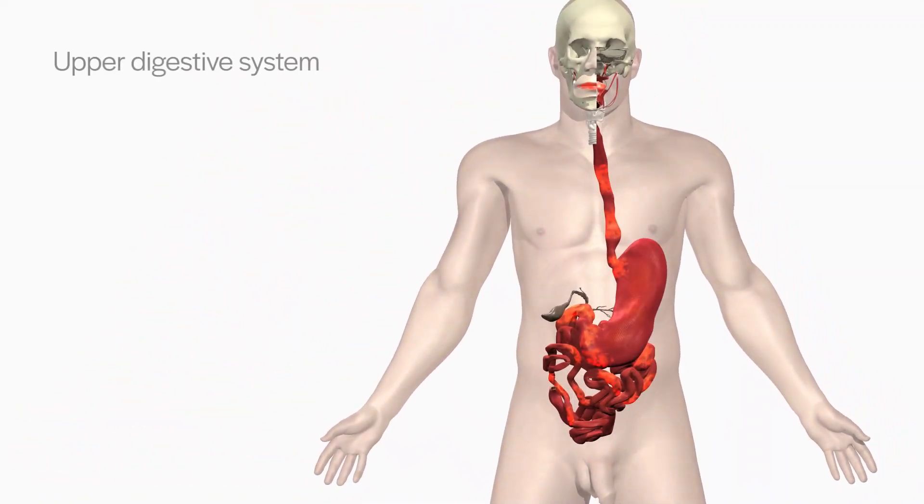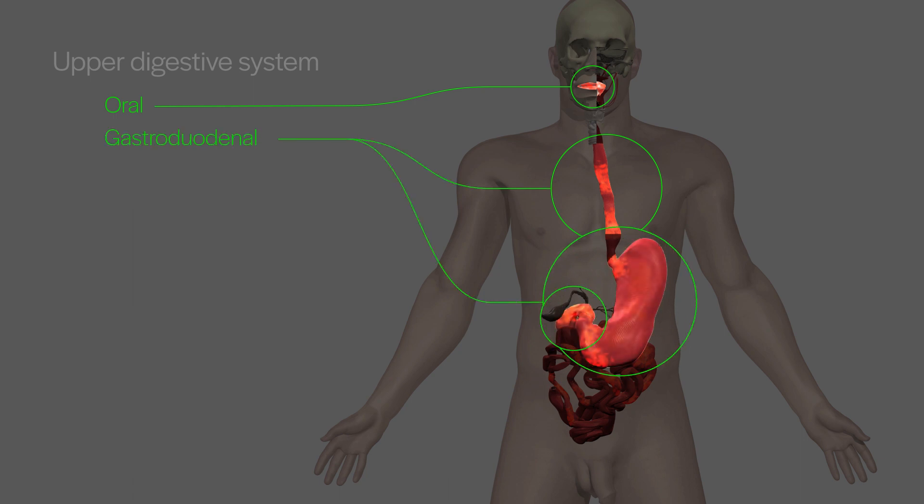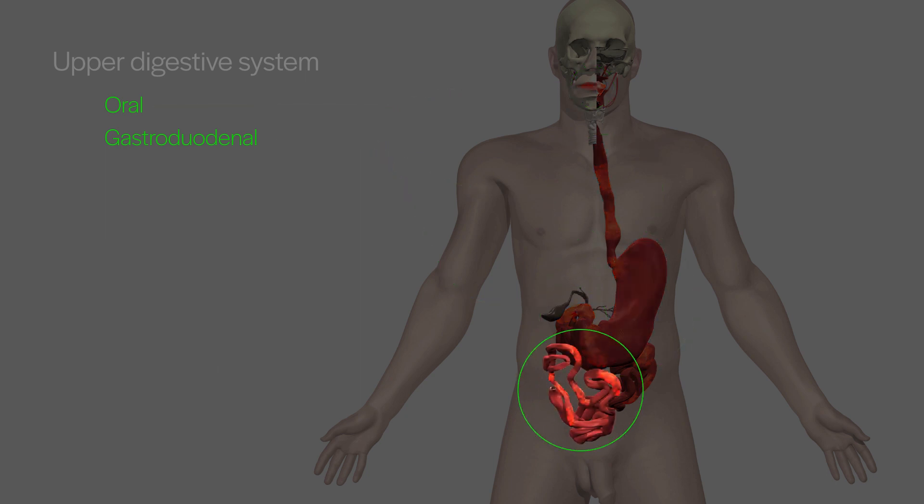The upper digestive system includes the mouth, which is known as oral Crohn's disease, the esophagus, stomach, and duodenum, known as gastroduodenal Crohn's disease, and the small intestine, known as ileitis and jejunoileitis.